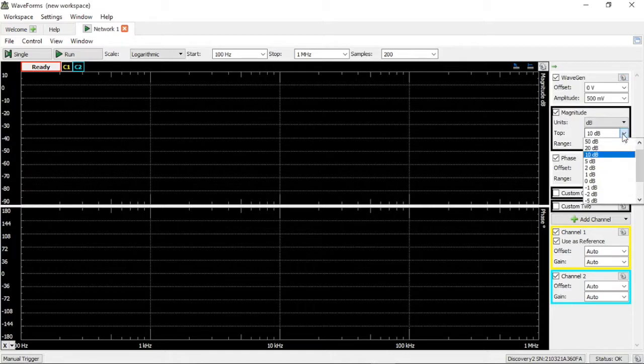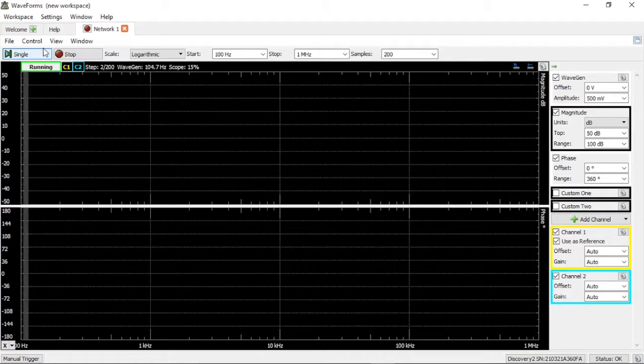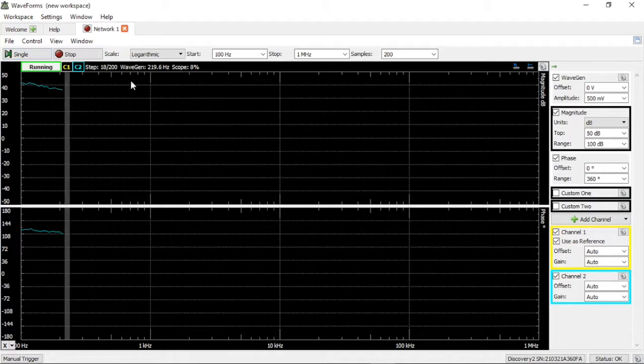Finally, we'll set our magnitude range from 50 dB to minus 50 dB. So now we can click the single button to acquire the loop gain of the converter. This will take a few minutes because we've increased our sample period.